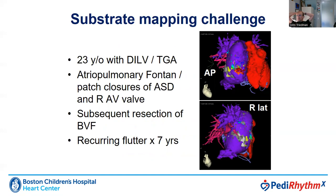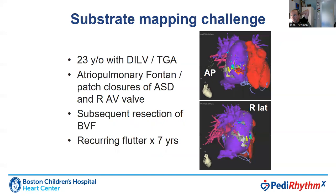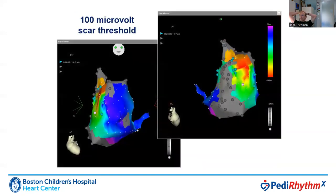He had an atrial pulmonary Fontan with patch closure of the ASD and was known to have a right atrioventricular valve which was also patched. He had subsequent resection of the bulboventricular foramen and after seven years was having recurring flutter. On the right, we see segmented MRIs of his atrial pulmonary Fontan shown in purple and the rest of his heart in red, and we're going to use that volume imaging to correlate with the maps drawn using electroanatomic mapping.